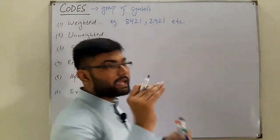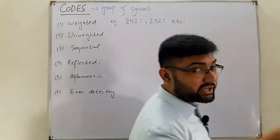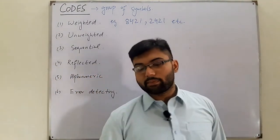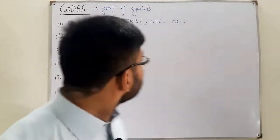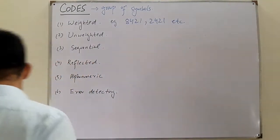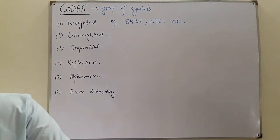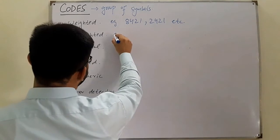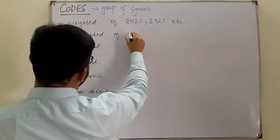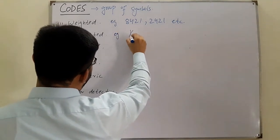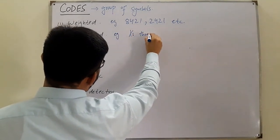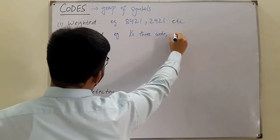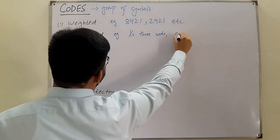Unweighted code — each and every digit does not have a particular weight associated to it. An example is the Excess-3 code and also the Gray code.